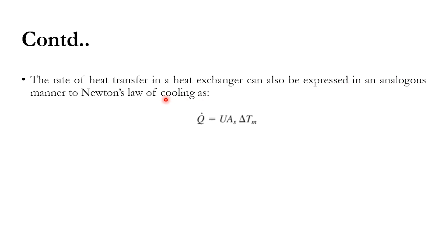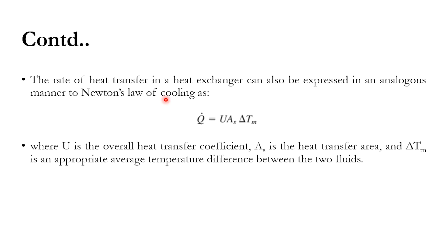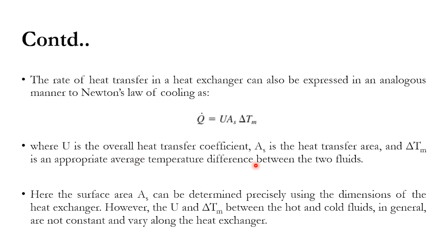The rate of heat transfer in a heat exchanger can be expressed using Newton's law of cooling as Q = U · A · ΔT_m, where U is the overall heat transfer coefficient, A is the heat transfer area, and ΔT_m is the appropriate average temperature difference between the two fluids. The area A is found from the exchanger dimensions and remains constant, but U and ΔT_m vary along the tube length. We therefore use the log mean temperature difference (LMTD) for ΔT_m, which will be defined and explained in the next lecture.